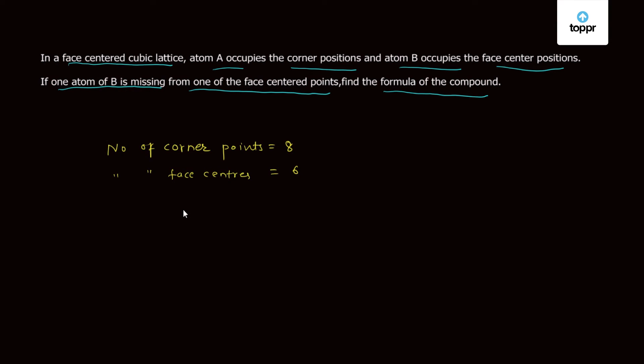Now let's find out the contributions. Atom A is at corner point. Therefore, there are total 8 points and the contribution of each atom to the cell is 1/8. Therefore, 8 times 1/8. Atom B is at face center, but one atom of B is missing from one of the face center points. Therefore, the total atoms of B are 5. The contribution of the atom at face center to the cell is half.